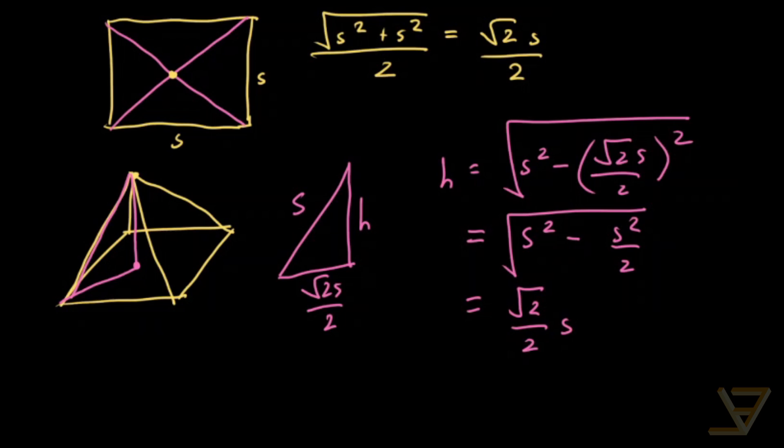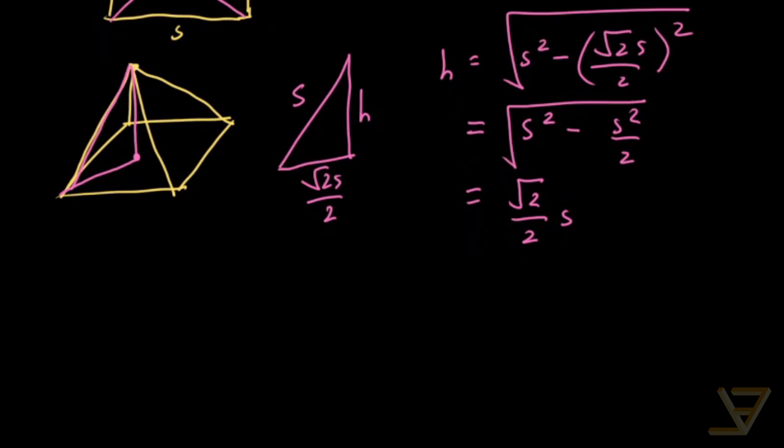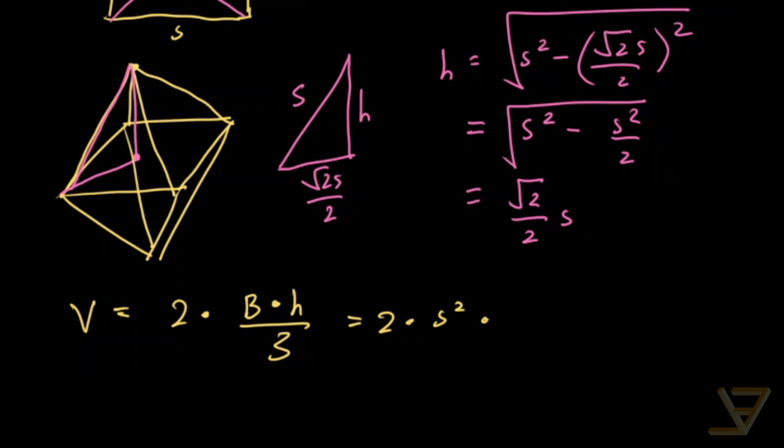So that's the height of the square base pyramid. At that point, the volume is easy because we have another square base pyramid down here, so we just multiply the volume by two. So the volume is equal to two times the area of the square base times height over three. And that's equal to two times s squared times square root of two over two s all over three.